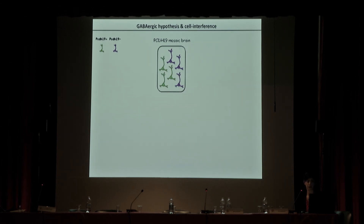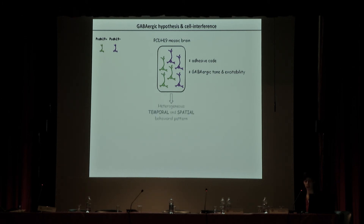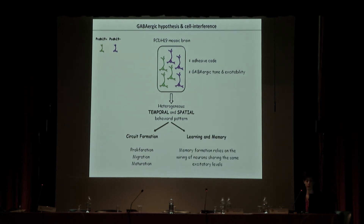One of our next goals is to place this GABAergic hypothesis in the context of cell interference. As you know, for this pathology the coexistence of protocadherin-19-positive and negative cells is crucial. These two cell populations differ not only in their adhesive code — since protocadherin-19 is an adhesion molecule — but we think they may also differ in their GABAergic signaling and excitability level. Given the role of GABAergic inhibition, this may cause a bias during circuit formation.